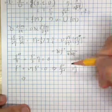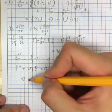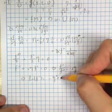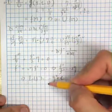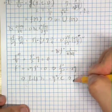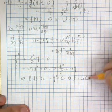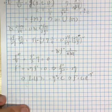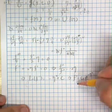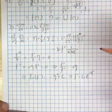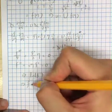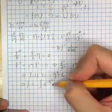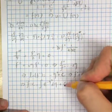Integrating both sides gives ln(f prime) equals minus eta squared plus a constant. Taking the exponent of both sides, f prime equals c1 times e to the minus eta squared. Integrating both sides again gives our result: f equals c1 times the integral of e to the minus eta squared d eta, plus another constant c2.